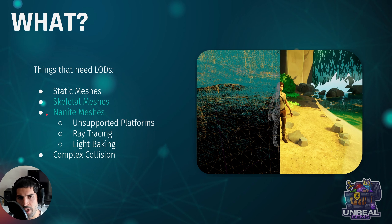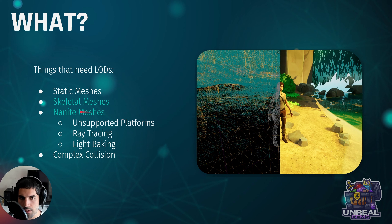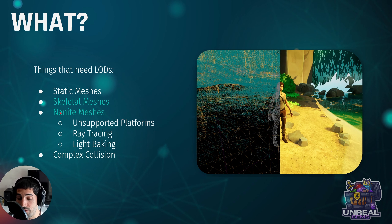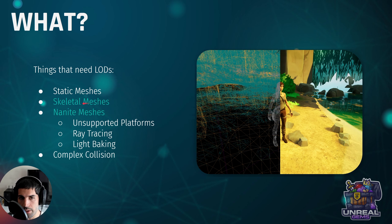Some people may think that since we have Nanite, no longer all of this applies. That's a mistake. Even if you have Nanite, which in theory deals with the levels of detail automatically for us, you're going to see that for some cases which I have highlighted here — for example, Nanite does not support skeletal meshes. So in this case, Nanite cannot help us. We need levels of detail.